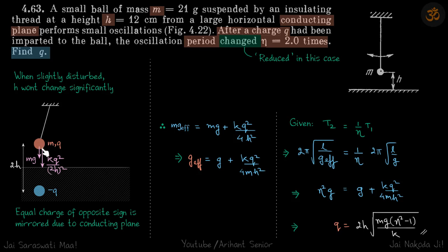When you do that, the g effective will increase. We know time period is 2π√(l/g_effective), so if g effective increases, time period decreases.